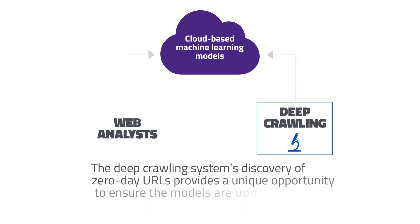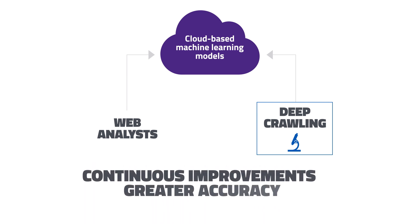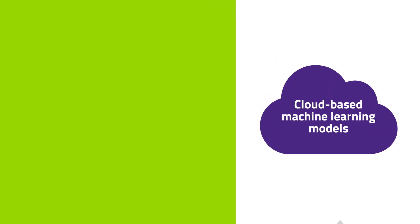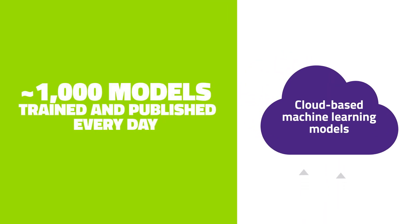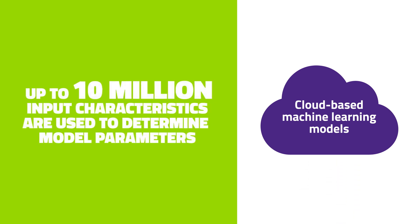The deep-crawling system's discovery of zero-day URLs provides a unique opportunity to ensure the models are updated. This cycle provides continuous improvements and greater accuracy, even for never-before-seen threats. Using these feedback loops, approximately 1,000 models are trained and published every day. Up to 10 million input characteristics for each object are used to determine tens of millions of model parameters, keeping false positives and false negatives to a minimum.